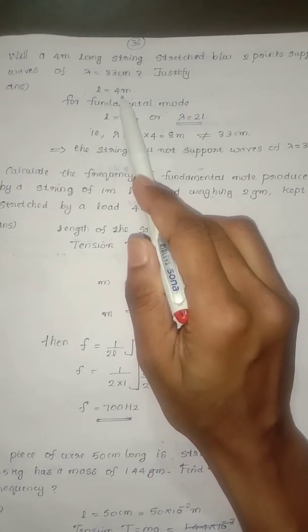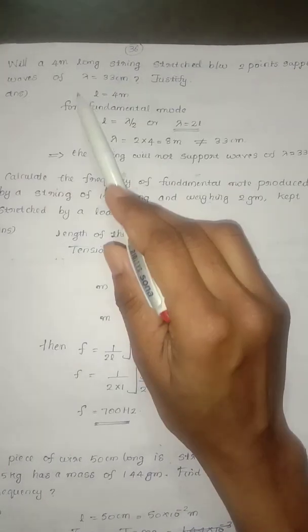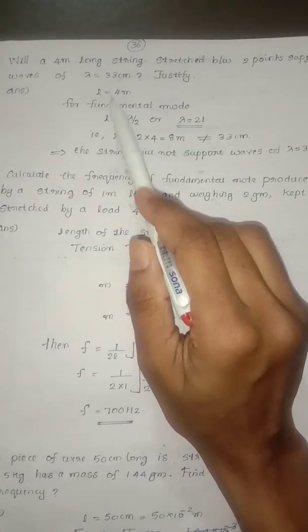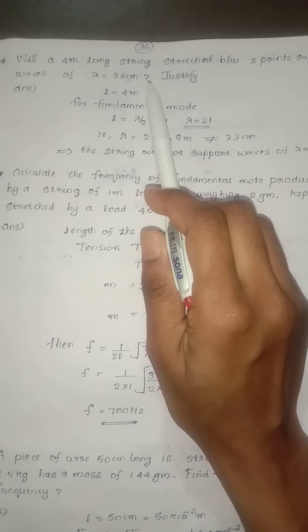Then length of 4m is the string. In the waves of the wavelength of 33cm, is this possible? This is the question.